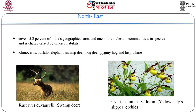The north-east zone is one of the richest in communities and species, characterized by diverse habitats and long-term geological stability. It covers 5.2% of India's geographical area. There are significant levels of endemism in all floral and faunal groups. It is only in the north-east that the full richness of the large herbivore fauna typical of alluvial grasslands can still be found — rhinoceros, buffalo, elephants, swamp deer, hog deer, pygmy hog and hispid hare. The region represents an important flyway for waterfowl and other birds seasonally migrating. In the slide we can see the swamp deer and the yellow lady's orchid.